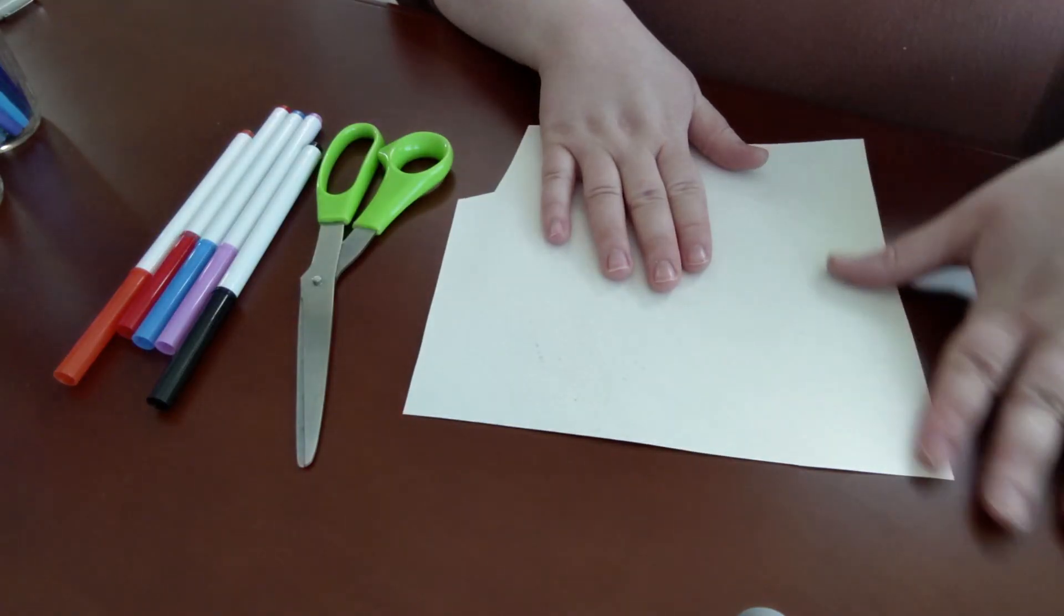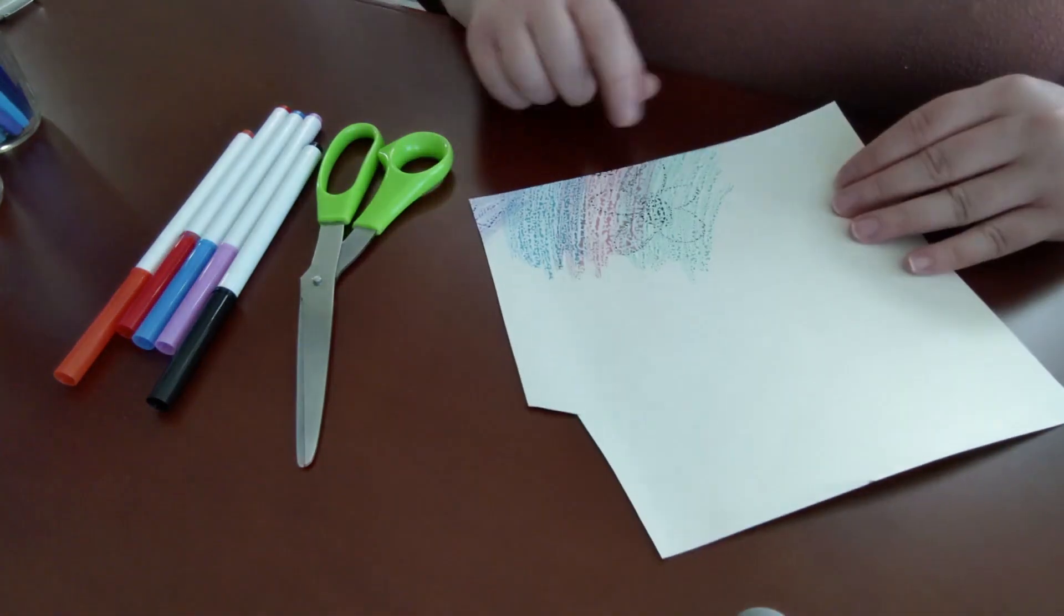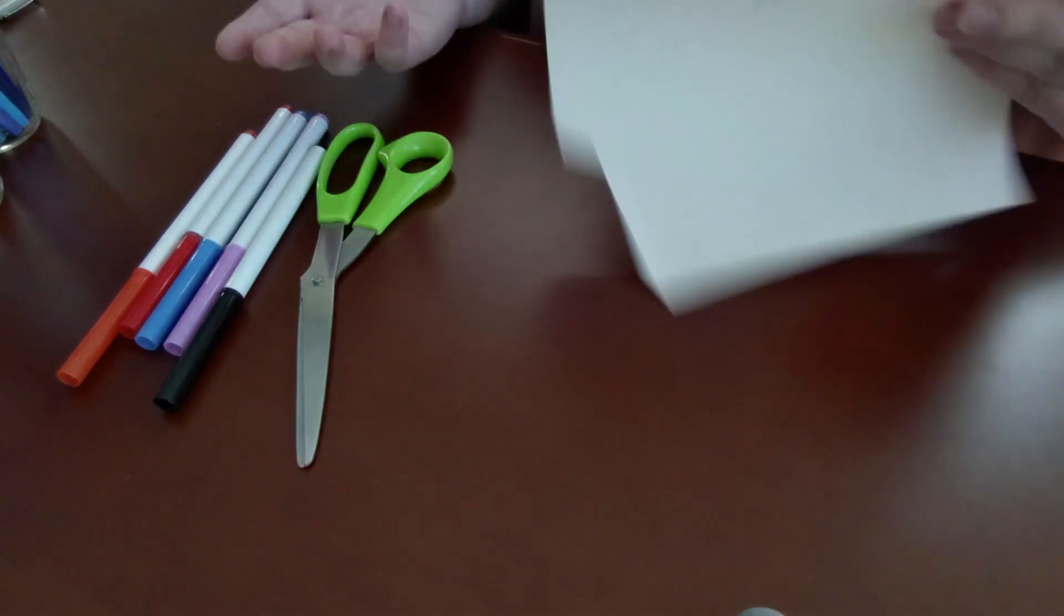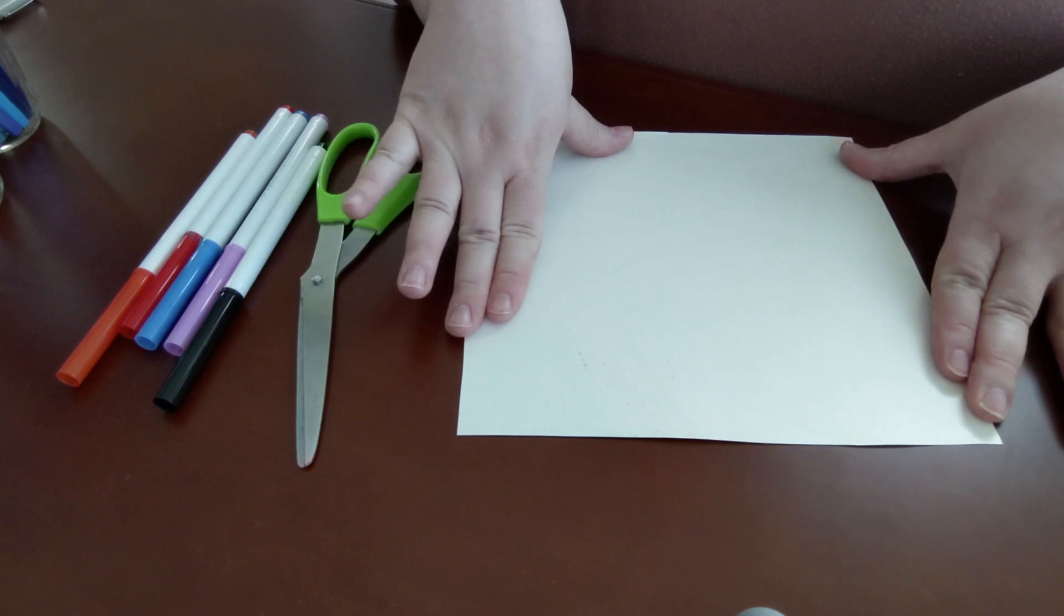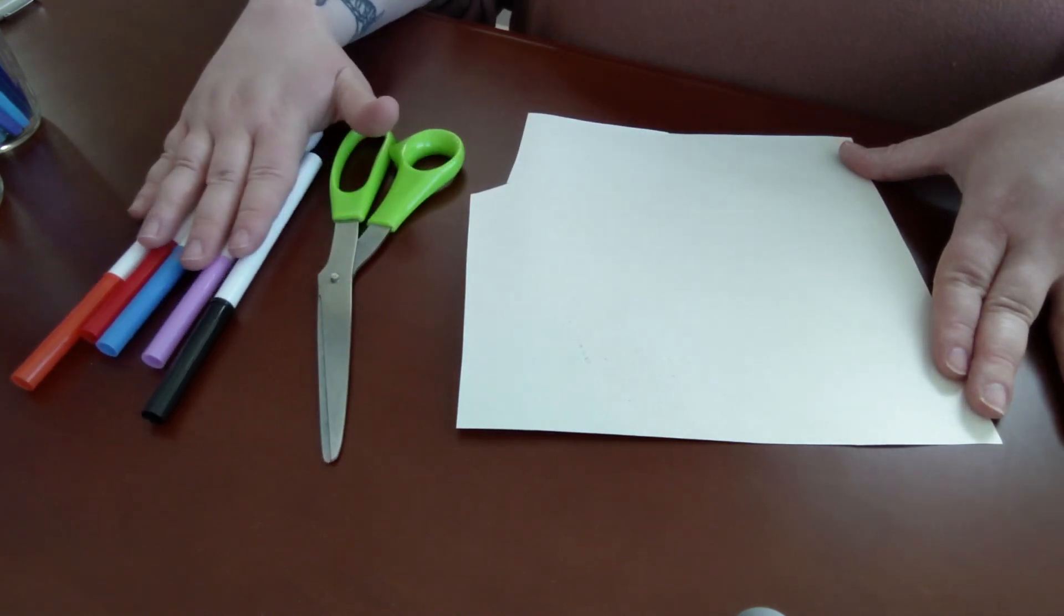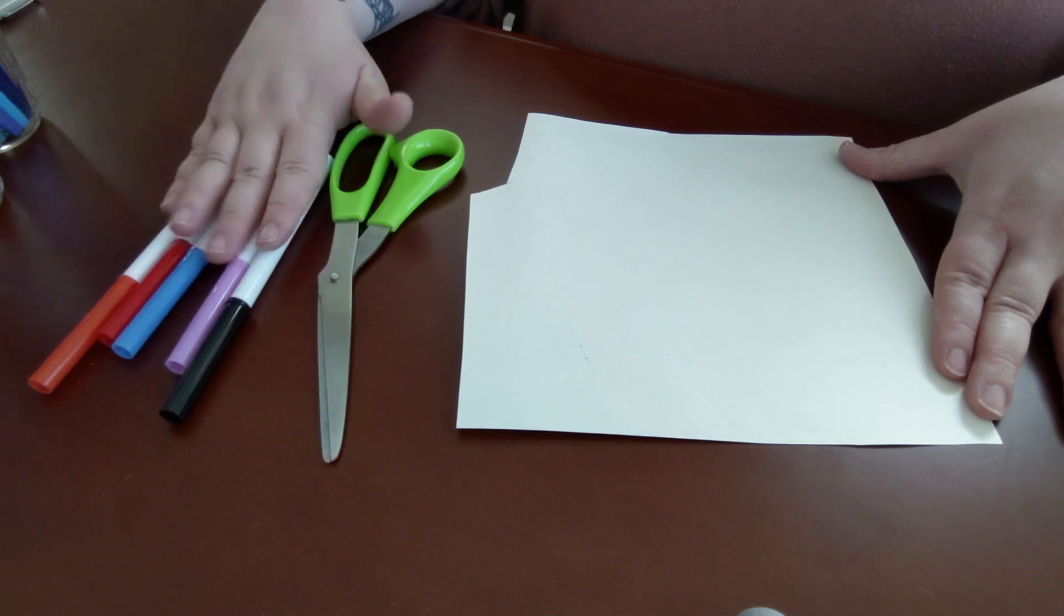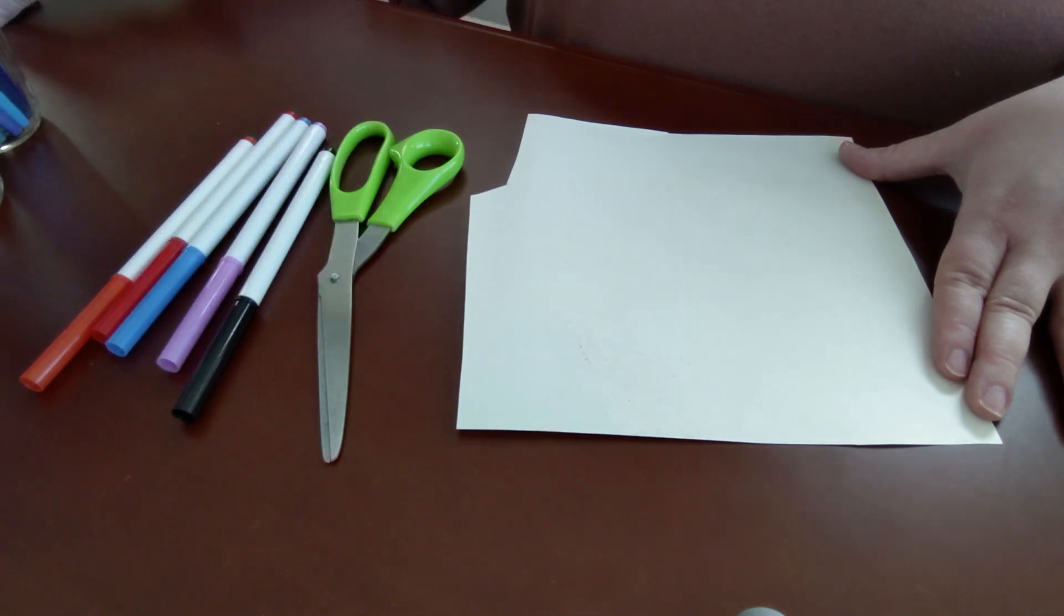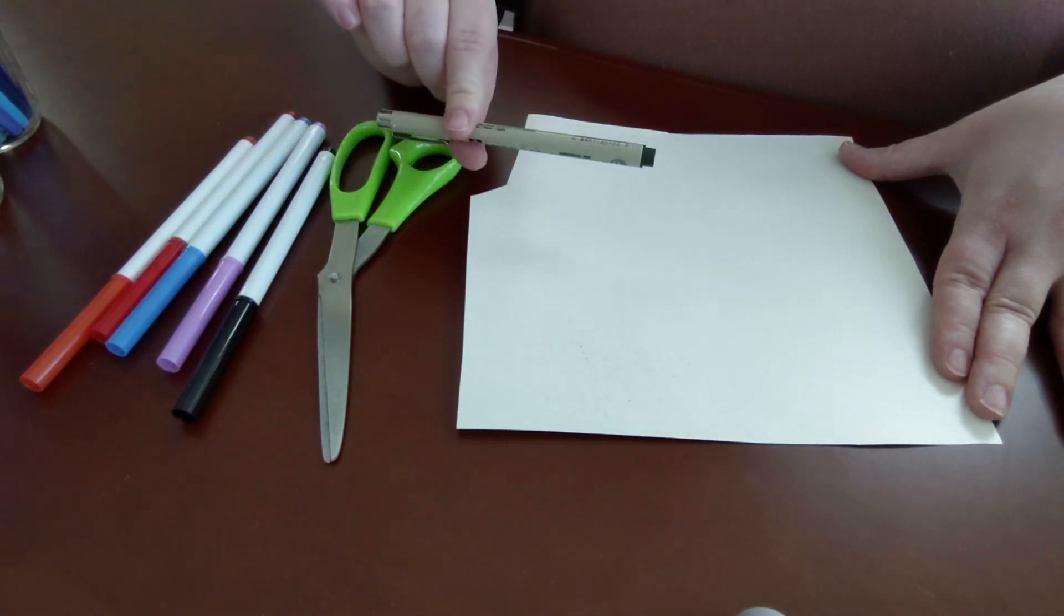The only things you'll need for today's project is a piece of paper. I'm actually using one that's already used on the other side, and I'm just going to use the clean side. You'll need some scissors and some markers or crayons or colored pencils or paint, whatever you like to use, and then just a pen or a pencil to draw with.